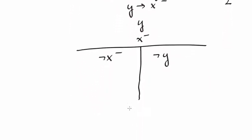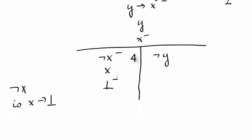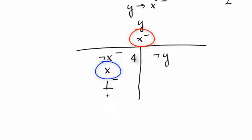We next apply the negative implication rule to not x minus, since this is x implies false minus. When we apply it we add x plus and false minus. At this point we have x plus and x minus, so there's a clash.